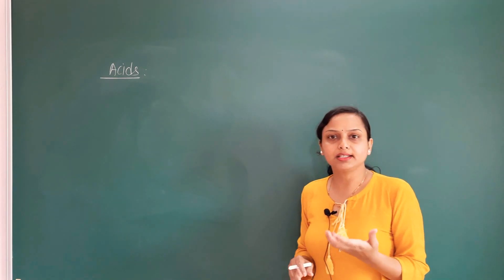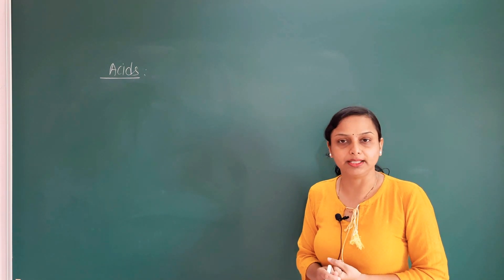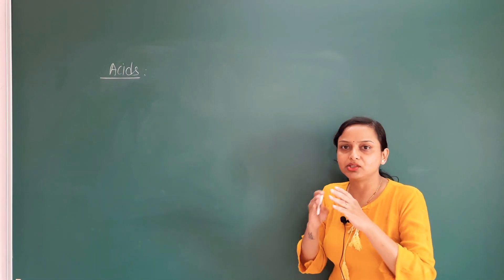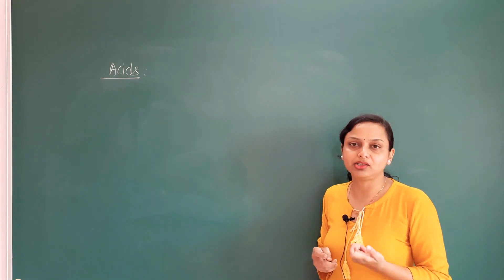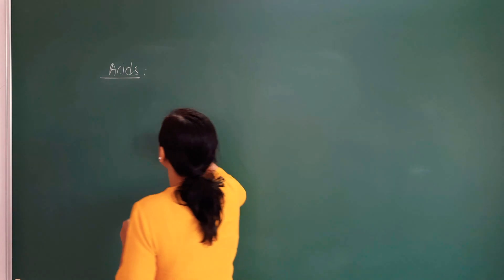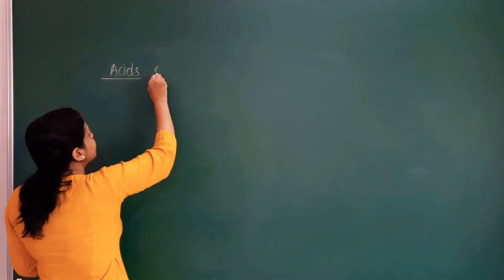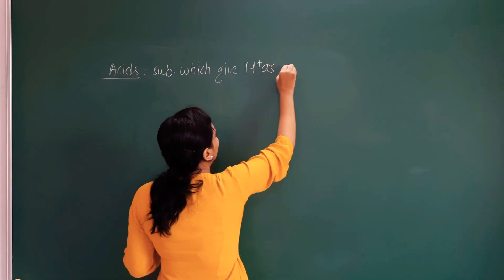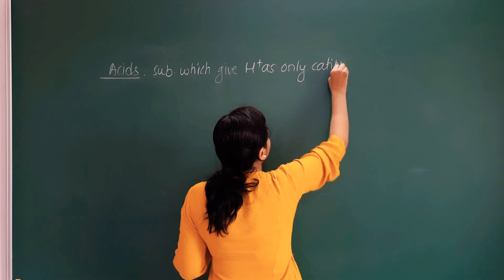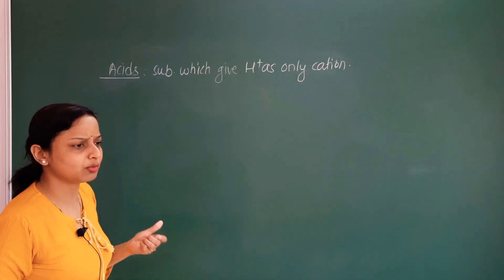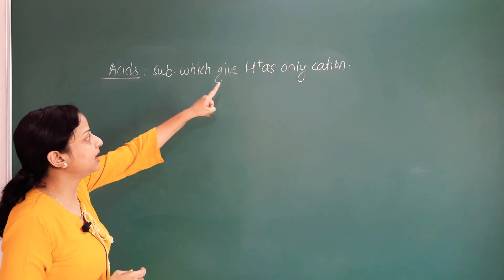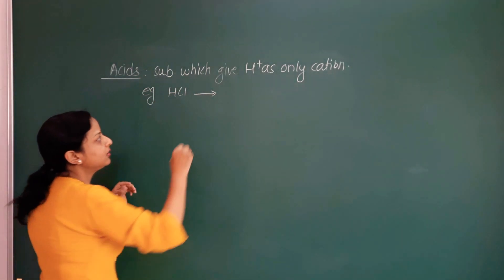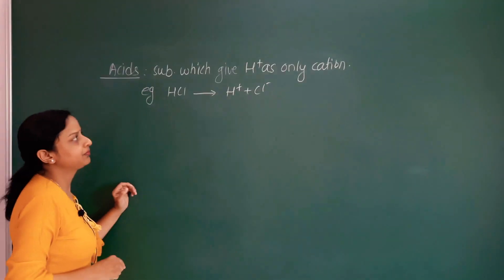Now we have to study the acid concept. What is acid? Acids are substances which, when dissolved in water, give H⁺ cations. Cation means the acid is a positively charged ion. When dissolved in water, ions separate — for example, HCl separates into H⁺ and Cl⁻. H₂SO₄ dissolves and separates into H⁺ and SO₄²⁻.